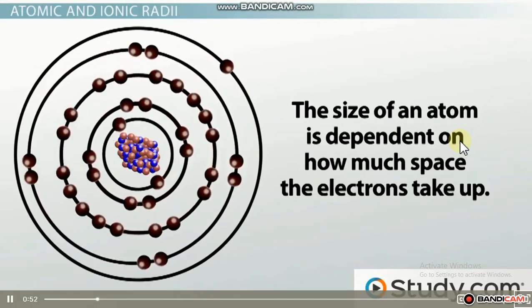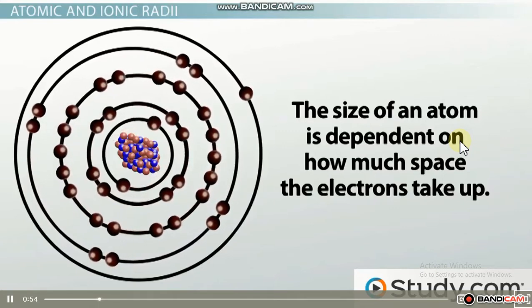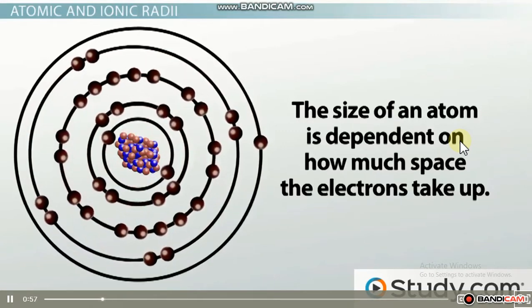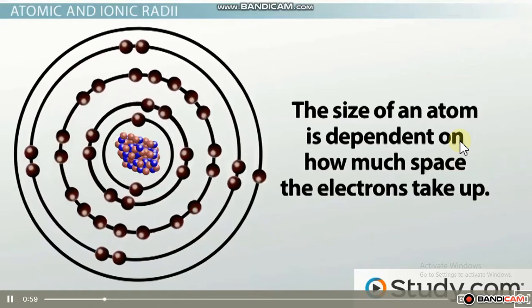But if electrons are always moving, and we never really know exactly where an electron is at any given time, how do we measure the size of an atom?